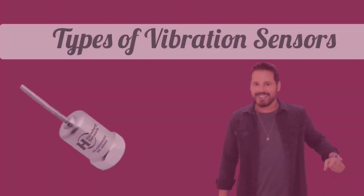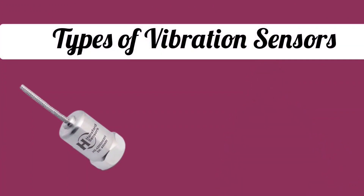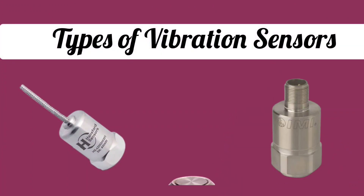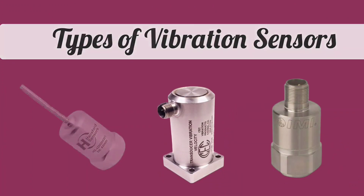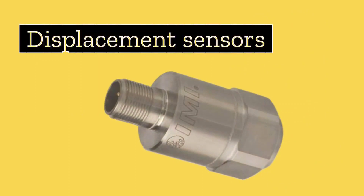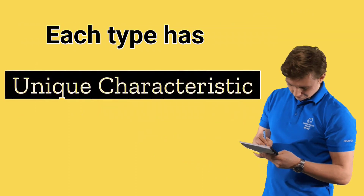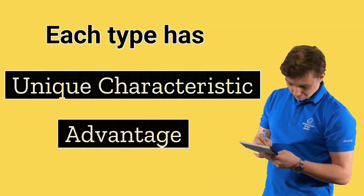Now let's discuss types of vibration sensors. There are many types of vibration sensors, such as accelerometers, velocity sensors, and displacement sensors. Each type has its own unique characteristic and advantage.